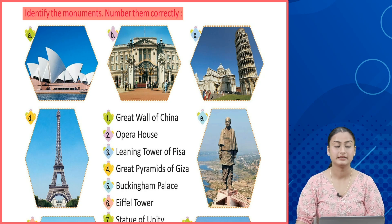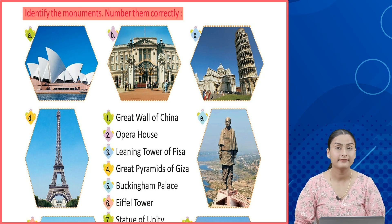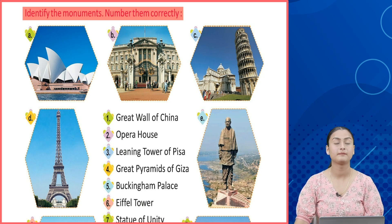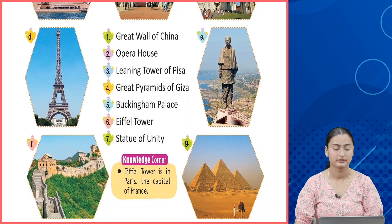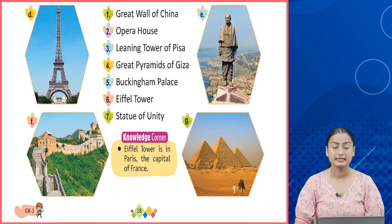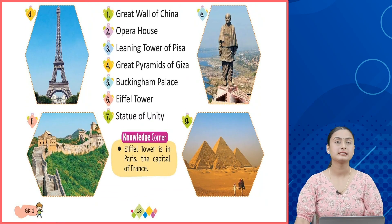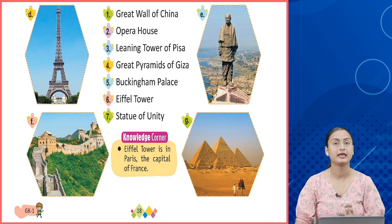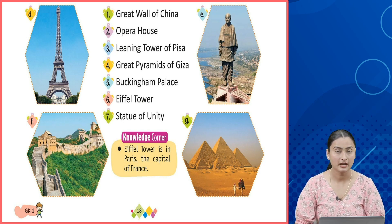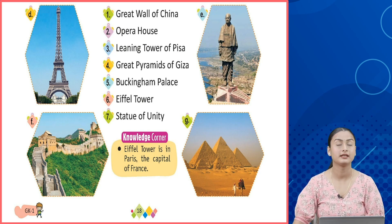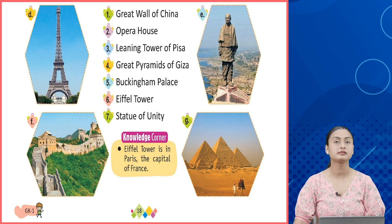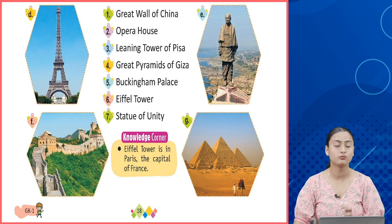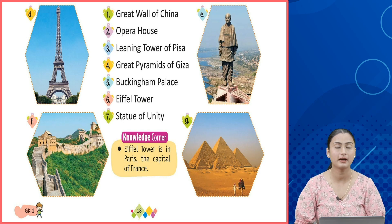Students, A is the Eiffel Tower — Eiffel Tower is your number 6. E is the Statue of Unity — Statue of Unity is in India, your own country, and you will match it with number 7. F is the Great Wall of China — mark it with number 1.